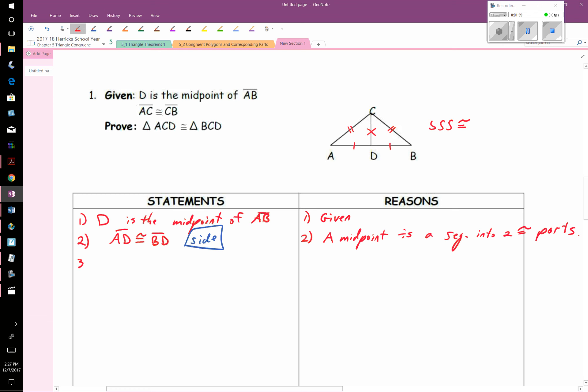The next thing is, I do know that AC is congruent to CB because they told me or they gave me that information. So this is also given. And again, this is another side I need to find.